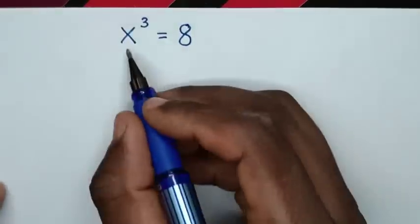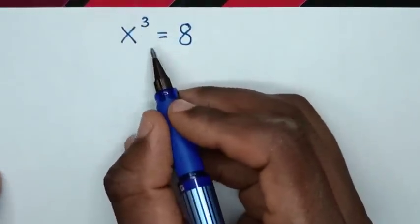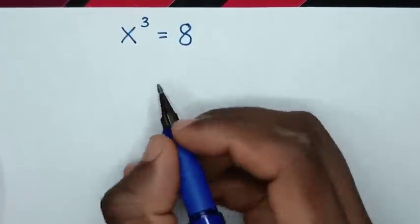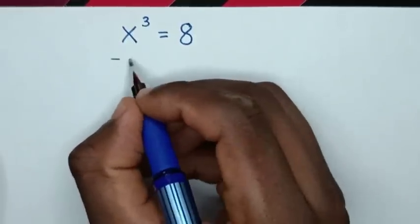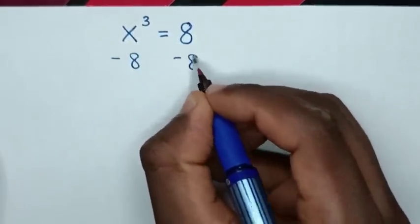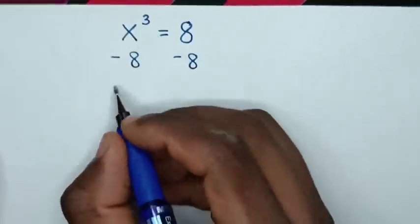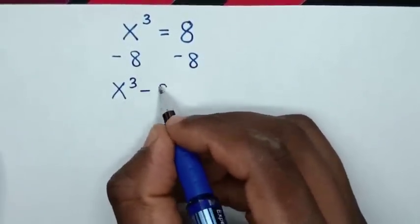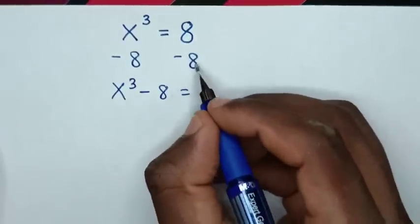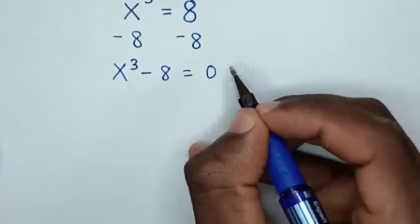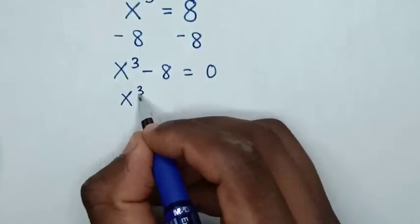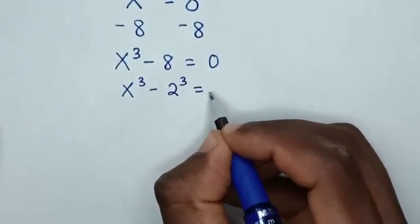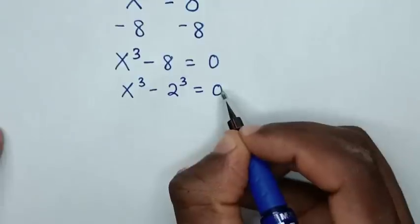Hello. How to solve x³ = 8 to find the values of x. First we will minus 8 on both sides. Then it will be x³ - 8 = 0. This is the same as x³ - 2³ = 0.